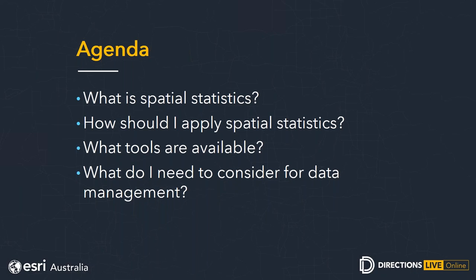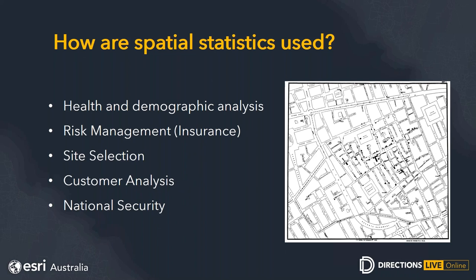How is spatial statistics used? A classic example — some would argue the beginning of it all — is the 1845 Broad Street cholera outbreak map. It displays incidents of cholera clustering around a central location, and as it turned out, a particular well was giving bad water. This is described in many geography and stats textbooks as the first beginnings of health analysis and spatial statistics. Extending that forward, a local example is the health and demographic analysis the Australian Institute of Health and Welfare produces — I'd recommend looking at some of their reports to understand how these statistics are used in the real world.